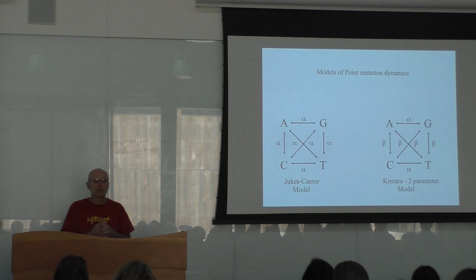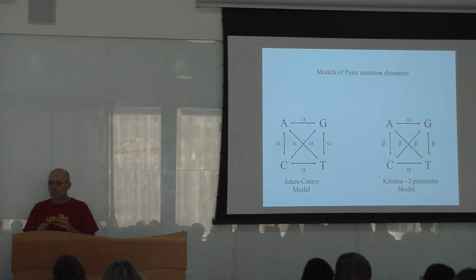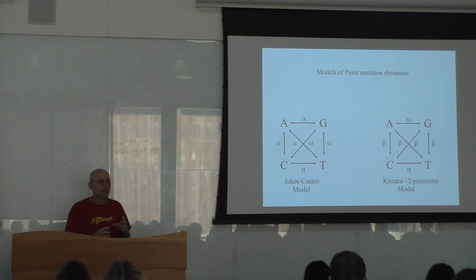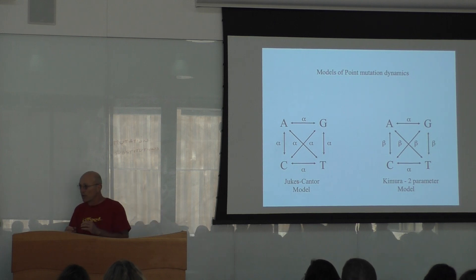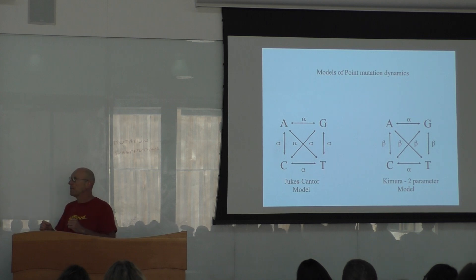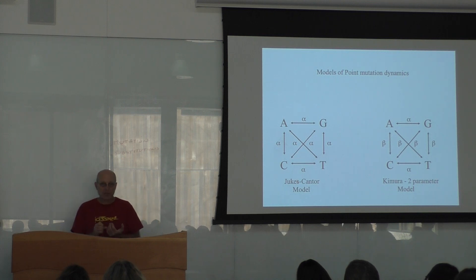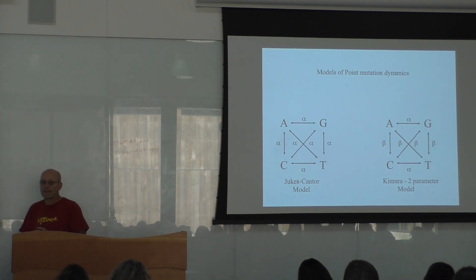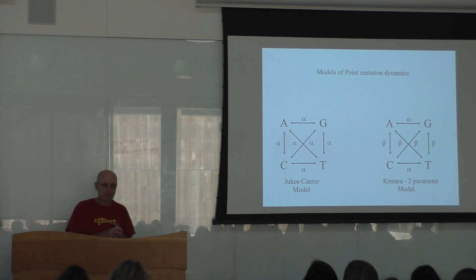Because the frequency of those mutation types is different, substitution models have also been modified. The original Jukes-Cantor model assumes that the frequency of any mutation is the same — alpha. In the Kimura 2-parameter model, you have a difference in frequency between a transition and a transversion: transition is alpha and transversion is beta.